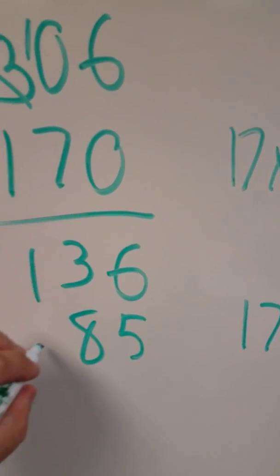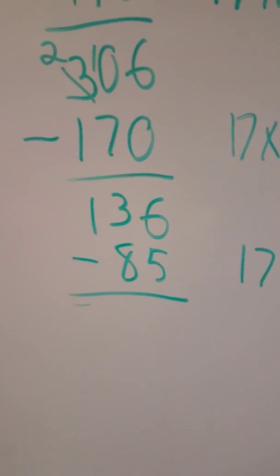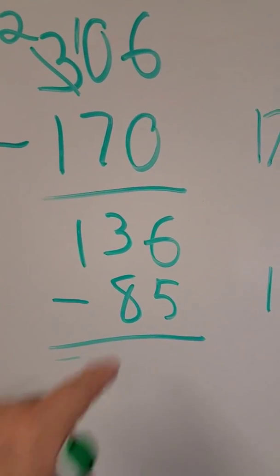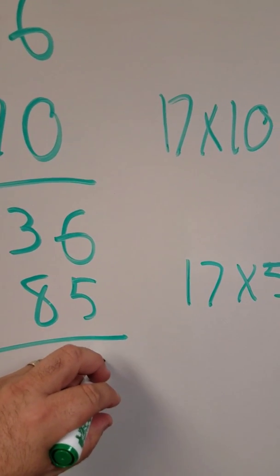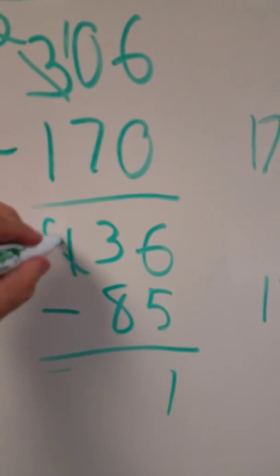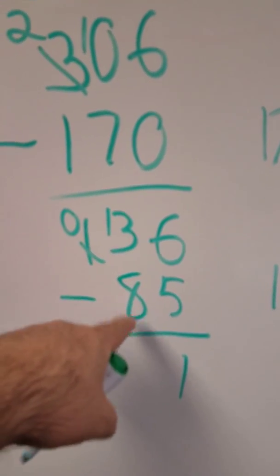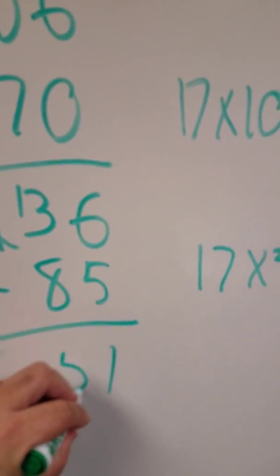So I'm going to go ahead and subtract 85 from the 136. 6 minus 5 is 1. And I got to regroup. 8 from 13 is 5. So we got 51.